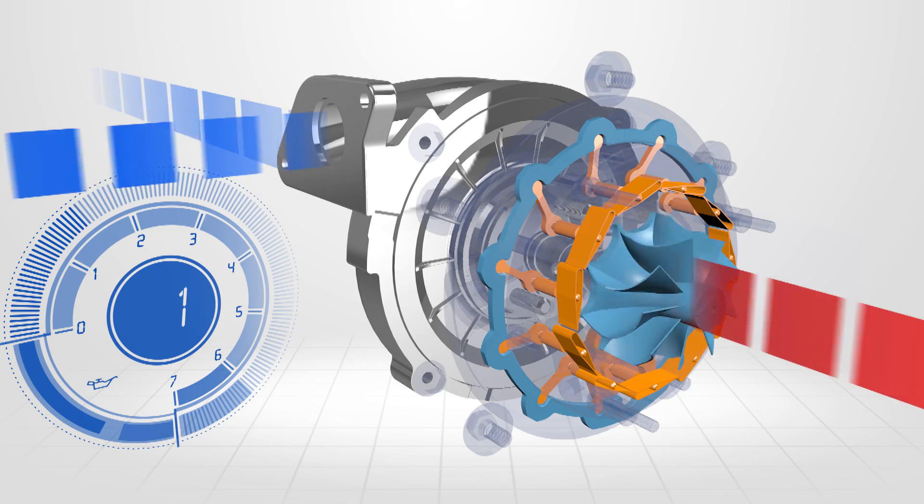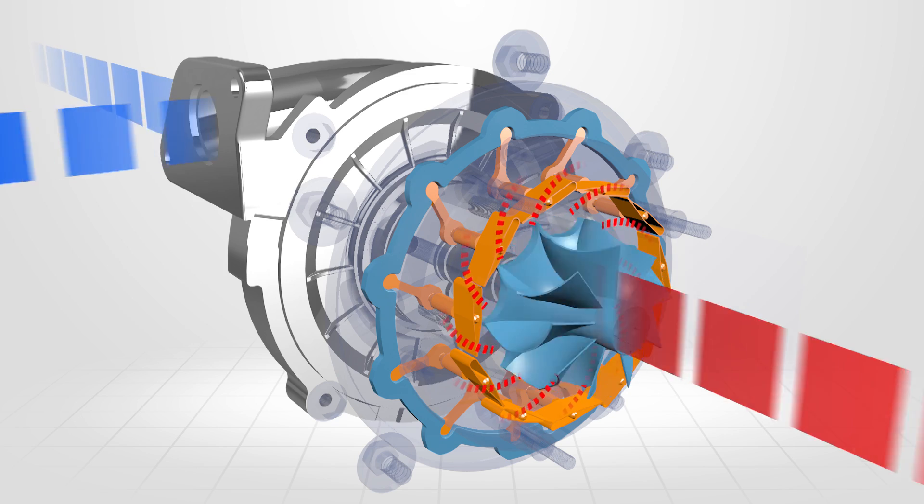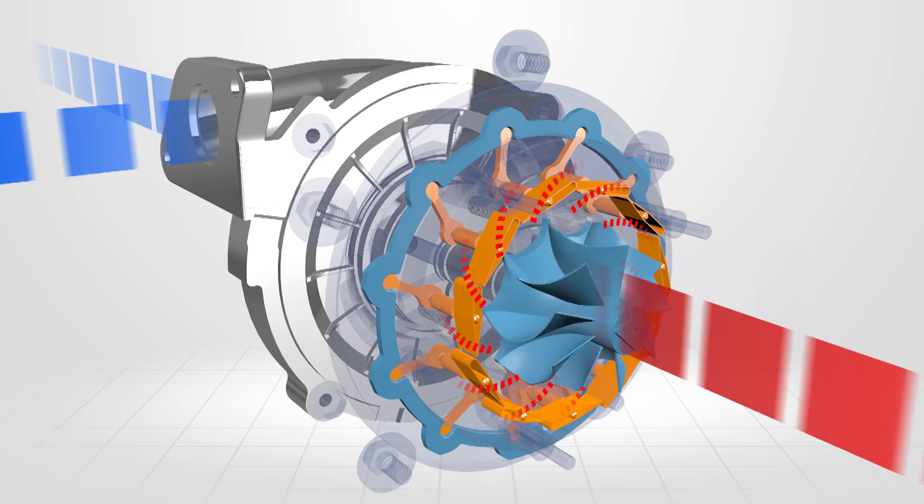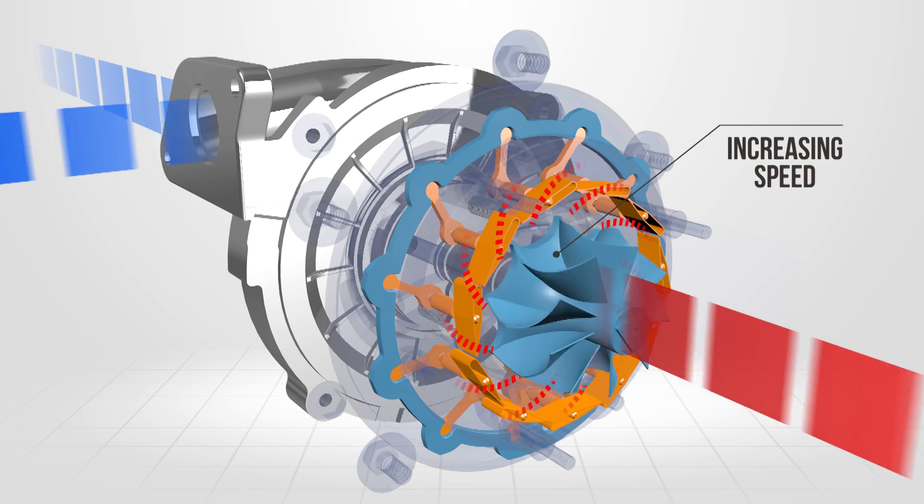With the nozzles in a closed position, only a small quantity of exhaust gas flows through the narrow passageway. The compressed gas increases the turbine speed, achieving a reduction in turbo lag and an improvement in acceleration.